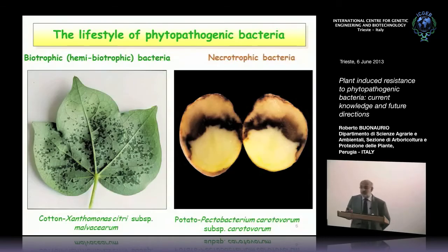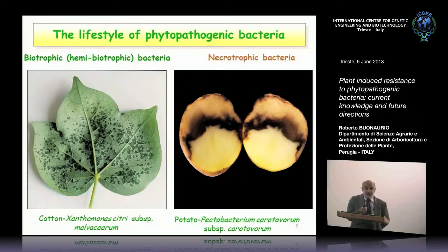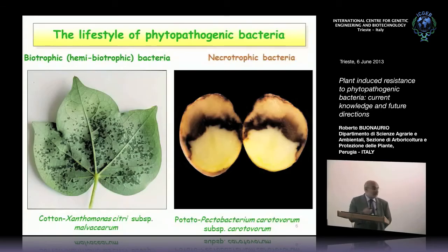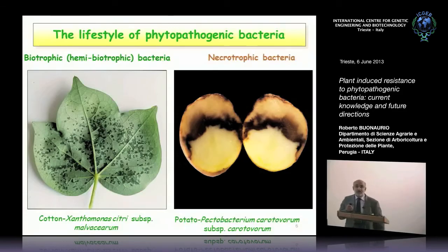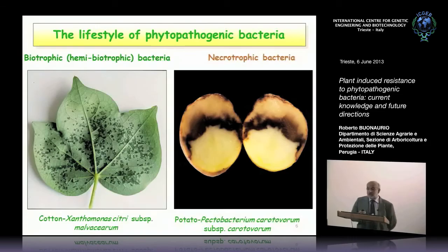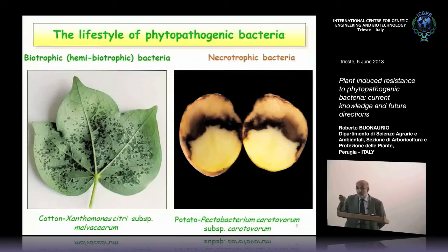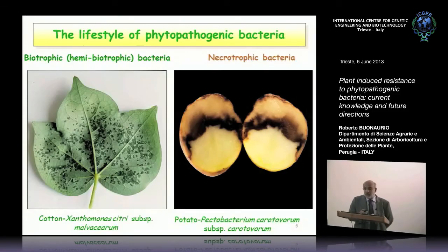In the opposite case, you can have necrotrophic bacteria that kill the cells through the production of phytotoxins, degradative enzymes, pectolytic enzymes, and many other enzymes that degrade the plant cell wall, and then live on the organic matter — for example, Pectobacterium carotovorum, which attacks potato tubers causing soft rot disease.